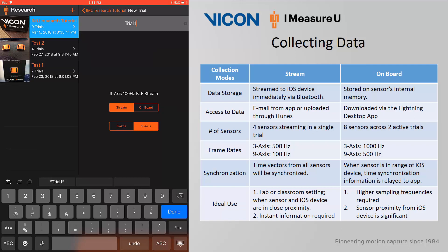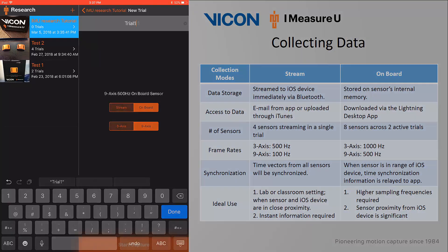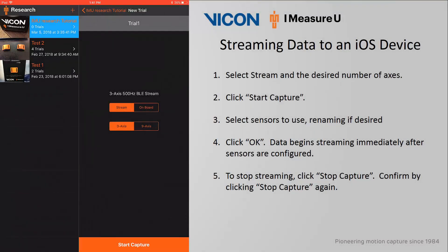In contrast, Onboard captures data directly to the onboard sensor memory. The data must be extracted via the Lightning desktop app, which will be discussed later in this video. Up to 8 sensors can be supported for 3 axes at 1000 Hz or 9 axes at 500 Hz across 2 active trials. Synchronization is handled by relaying information to the app whenever the sensors are in close proximity to the iOS device. This capture mode is best used when high frequencies are required or the sensor proximity is too large for a reliable and constant capture.